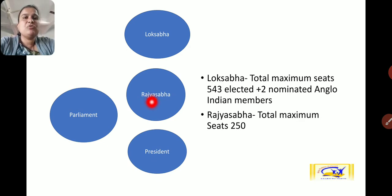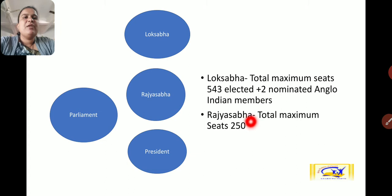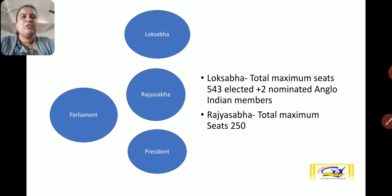Rajya Sabha is called the upper house and Lok Sabha is called the lower house. Rajya Sabha has a total maximum of 250 seats. So parliament includes Lok Sabha, Rajya Sabha, and the President.